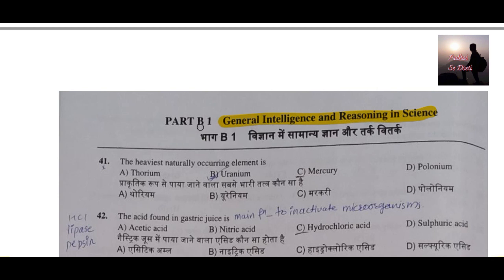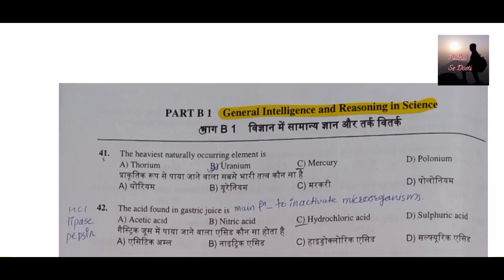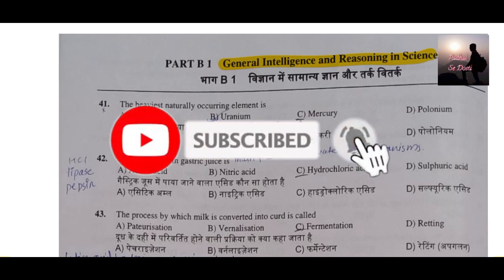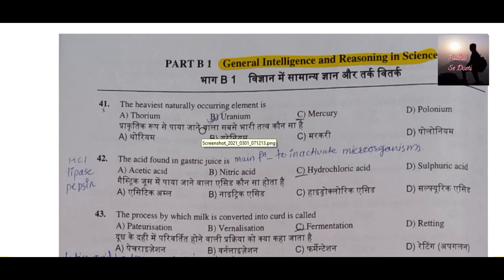Part B is dealing with general intelligence and reasoning in science. In Part B, there are also some accounting and commerce related questions for students from a commerce background. Let's discuss all 40 questions of Part B. I will bring more videos on different parts, so stay tuned with this video series and do subscribe to our YouTube channel to get notifications of upcoming sessions.